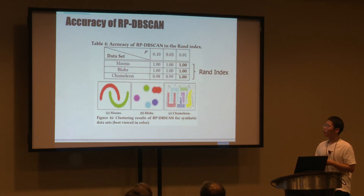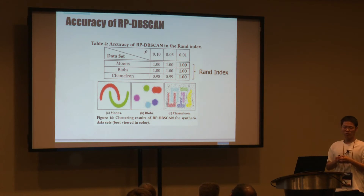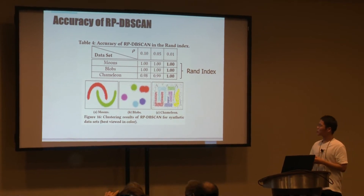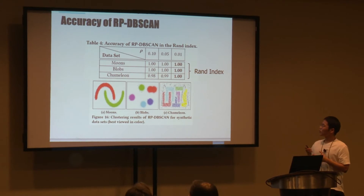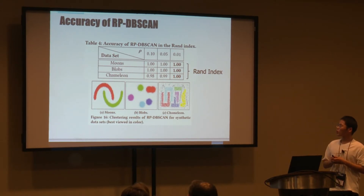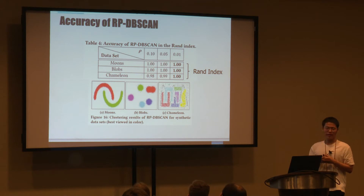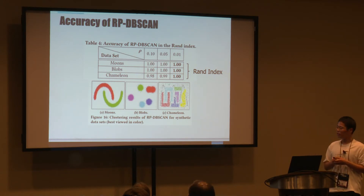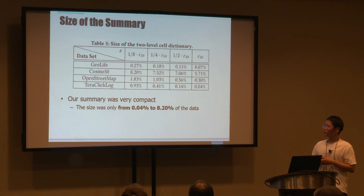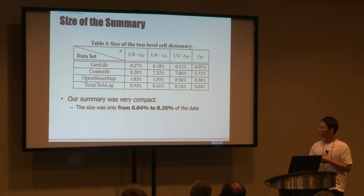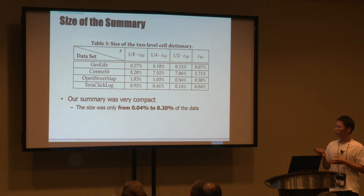For accuracy, we use the Rand index to measure the accuracy of our algorithm compared to the exact DB Scan baseline. When rho was 0.01, the Rand index was 1, meaning our algorithm's result was exactly the same as exact DB Scan. The visualization of our clustering results looks nice. Regarding summary size, it was only 0.04% to 5.2% of the dataset size, confirming our summary is very compact.